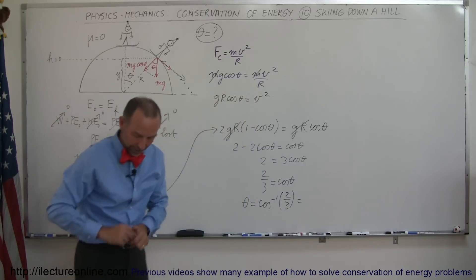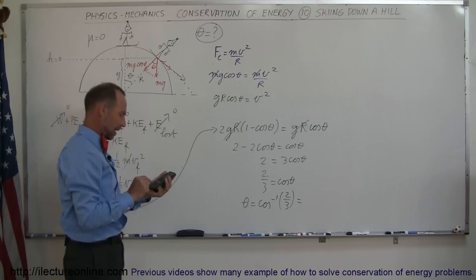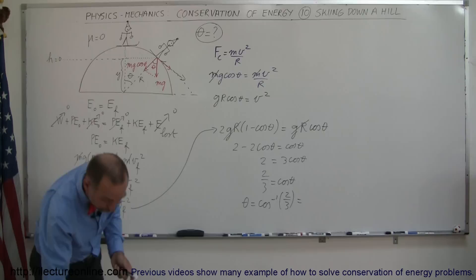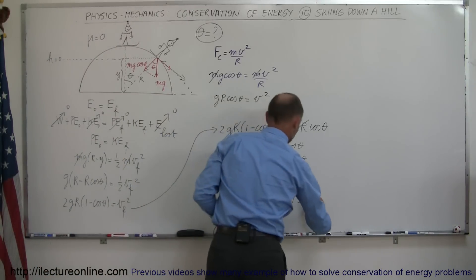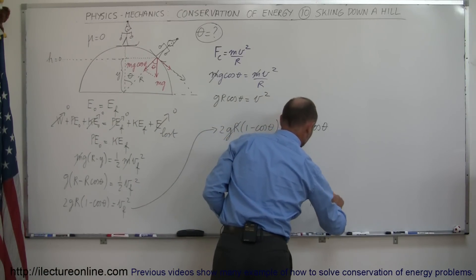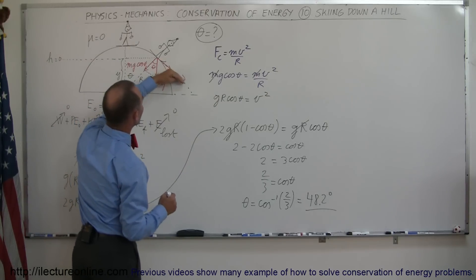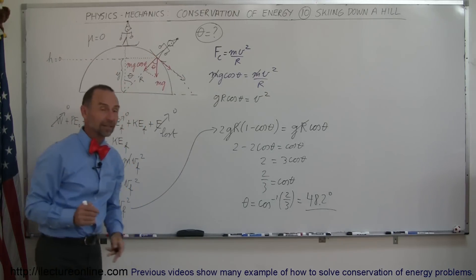And with a calculator, that shouldn't be too difficult to figure out, 2 divided by 3 equals, and I'm looking for the arcosine, sure enough 48.2 degrees, so when the angle gets to be 48.2 degrees, the skier will leave the ski hill and now become a projectile.